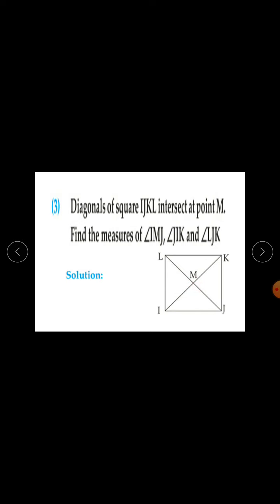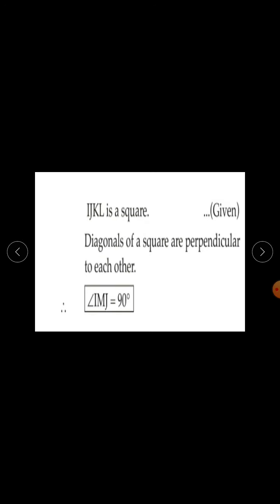We have to find out angle IMJ, angle JIK, and angle LJK. Solution: IJKL is a square — it is given.